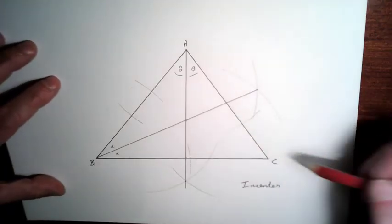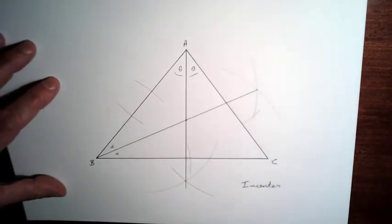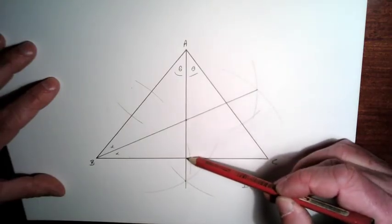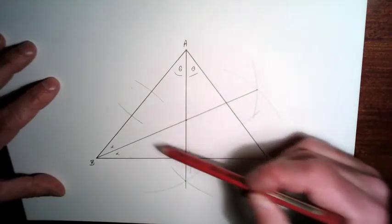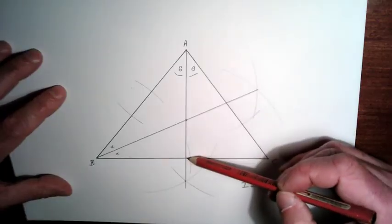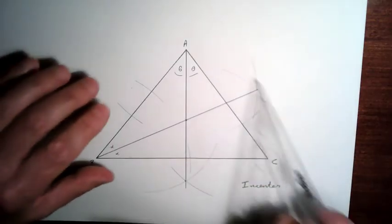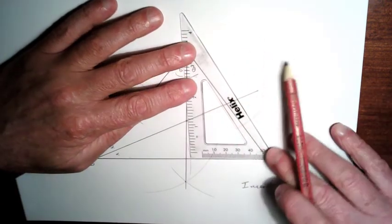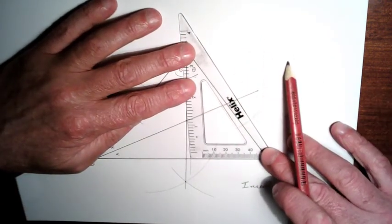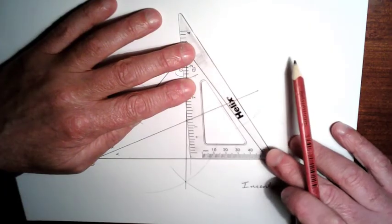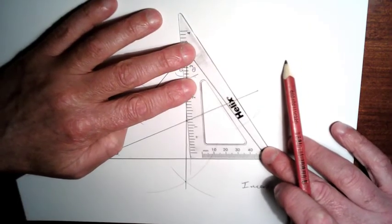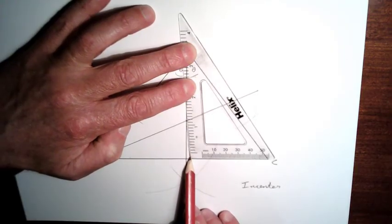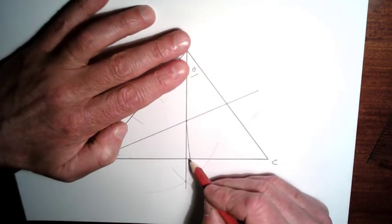We're now going to construct our in-circle. So in order to do that, we're going to put our compass here and we're going to bring our pencil down to here. And we're going to draw a circle. So how do we know where to put our pencil down here? Well, just get your set square and line it up with BC. Move it along until you hit the in-center and drop a perpendicular line down here. This is where you're going to put the pencil.